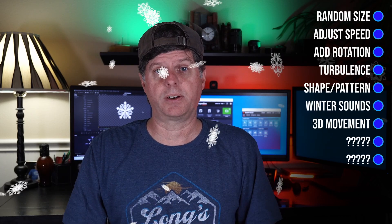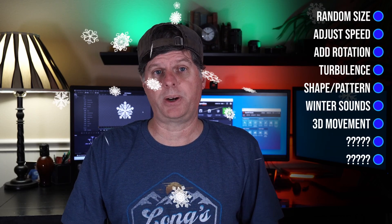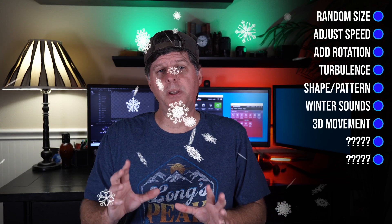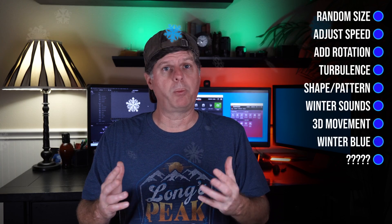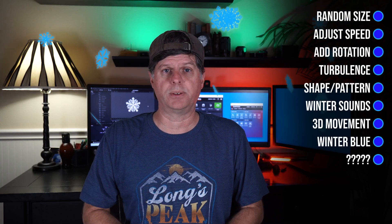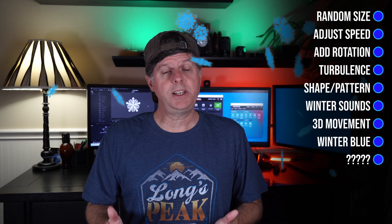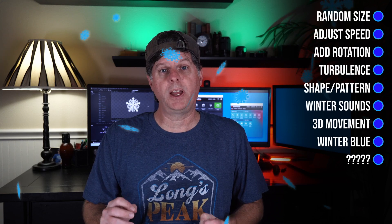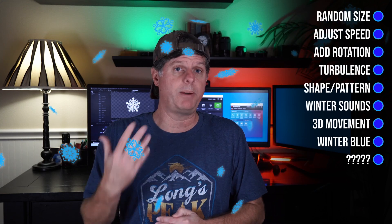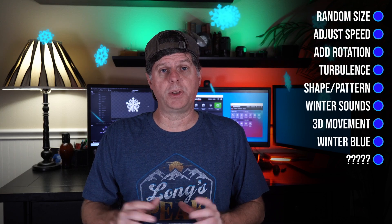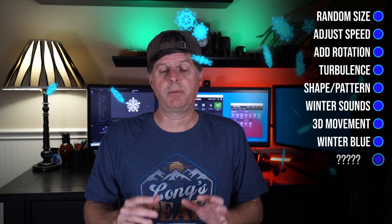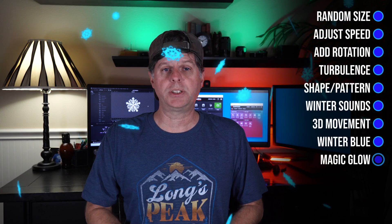We're building a pretty good scene here — it's looking a lot better. We're going to try changing the color. I'm going to make them a little bit of a blue, kind of give them that wintry blue cold kind of feel. And the last thing — we're going to add a little bit of glow on these snowflakes, kind of make them glow just a little bit.